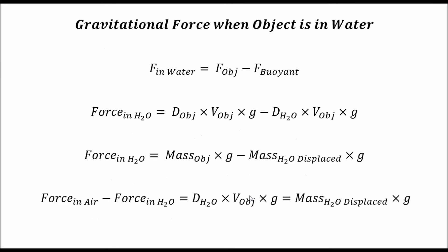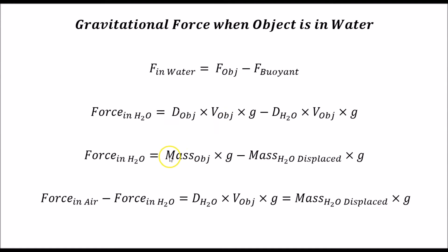Now let's examine the gravitational force when the object is in water. The force in water is the force on the object minus the buoyant force due to water displacement. So the force in water equals the density of the object times the volume times g, minus the density of the water times the volume of the object times g. Replacing density times volume with mass, the force in water is the mass of the object times g minus the mass of the water displaced times g.